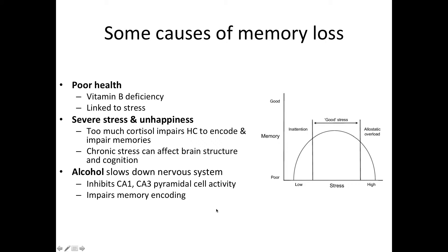Alcohol also impairs memories. It works by slowing down your nervous system and inhibiting CA1 and CA3 neurons, or pyramidal cells, in the hippocampus, causing trouble creating or encoding new memories. Looking at the relationship between stress and memory: low stress is actually good for memory and will increase your memory abilities — this is called eustress. But if you have too much stress, your memory will start being impaired.